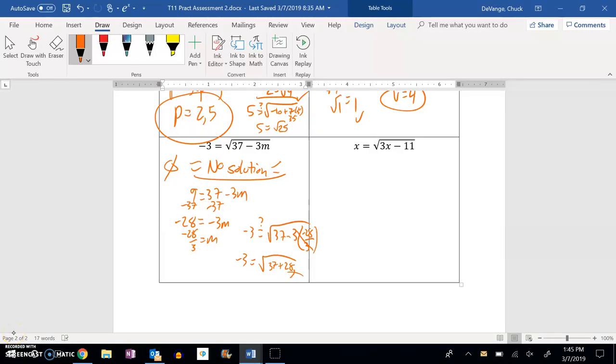So, let's go ahead and give this number 12 a try. Square both sides. X squared equals 3x minus 11.